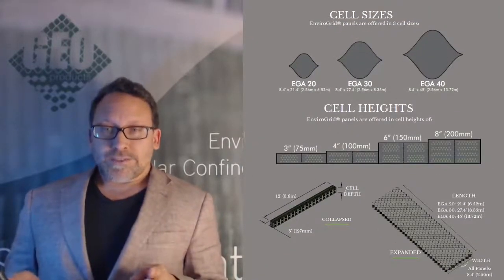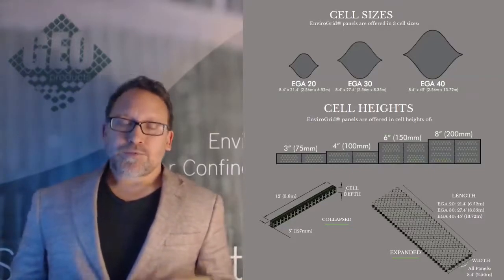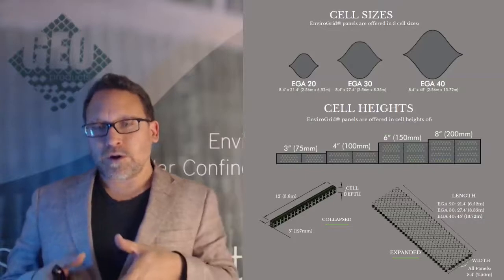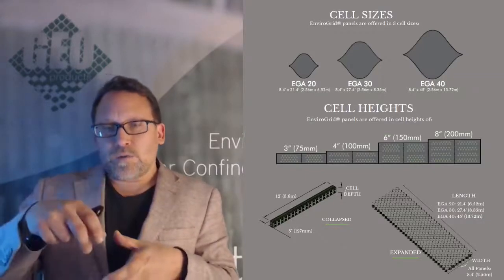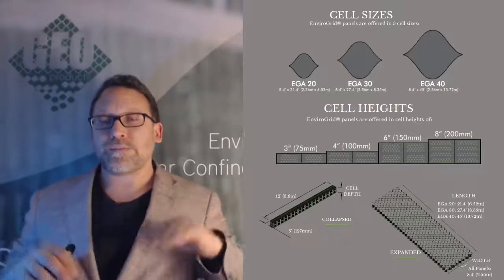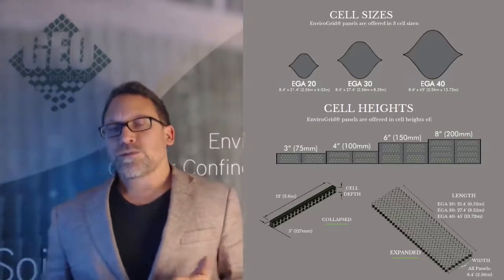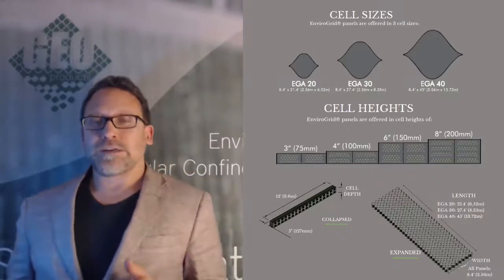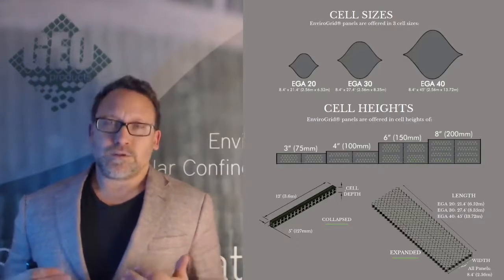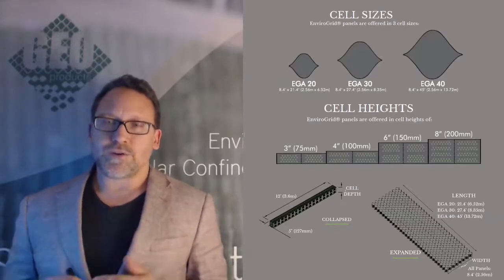One thing you do need to consider when you're designing is you have to pick what cell aperture you need. If you're going to have really small vehicle loading, foot traffic, ATV traffic, golf carts, you're going to need to use a smaller cell because you don't want that load to be able to get into the middle of that cell and push the material out. But if that load is able to bridge over one cell, then you'll be okay. For roads, parking lots, driveways, EGA 30 is sufficient to be able to support tire loads. EGA 40 really isn't used for load applications unless it's used in a sub-base application where there's going to be another layer on top of it that's going to bridge those cells.